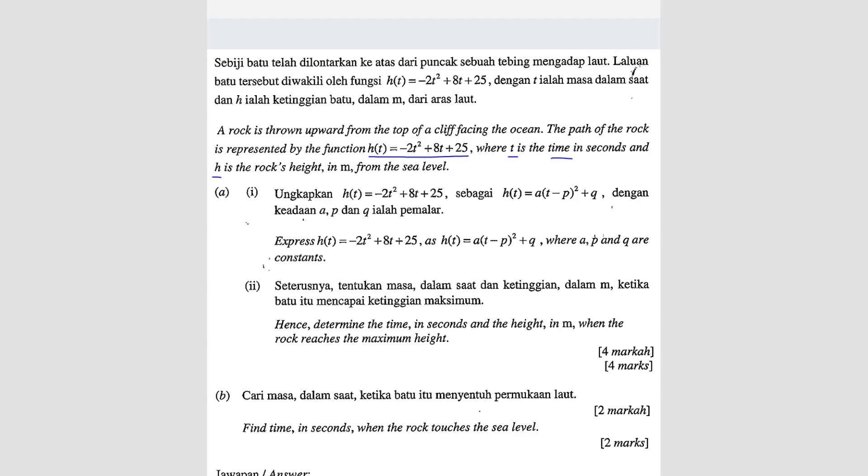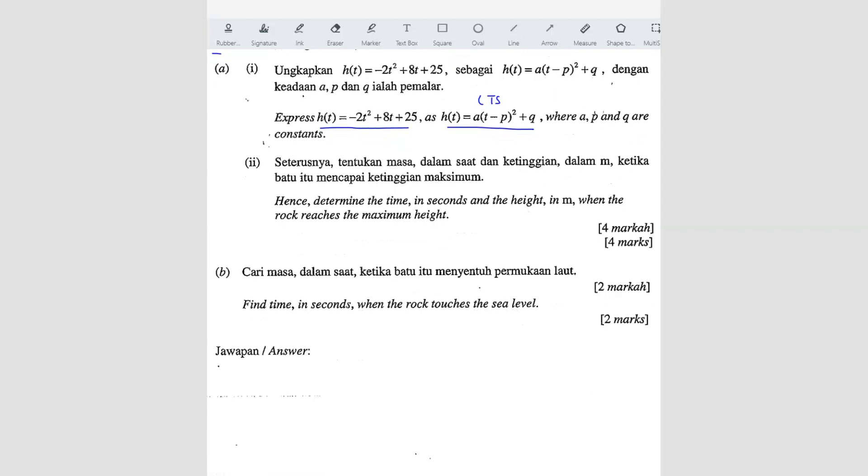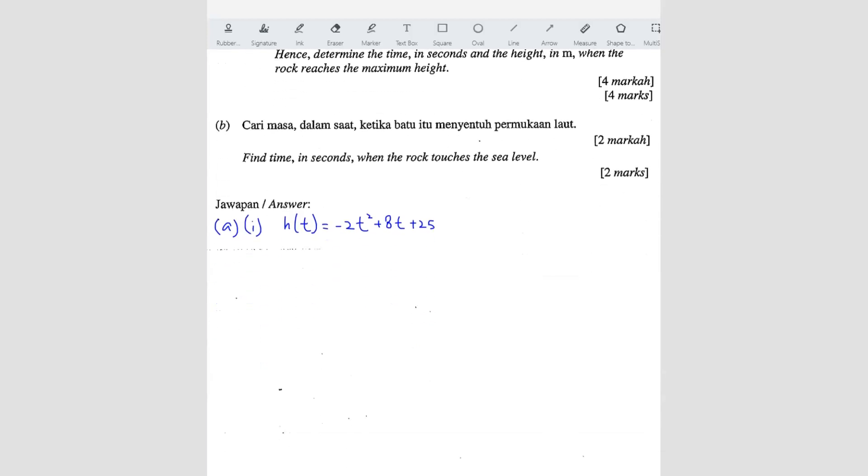Question A1. Express H(t) as this. So that means they want you to do completing the square. Only completing a square will give you this format. So the equation is H(t) equals negative 2t square plus 8t plus 25.